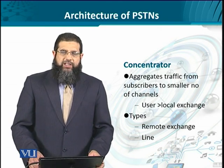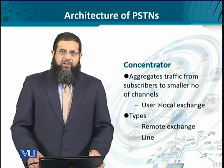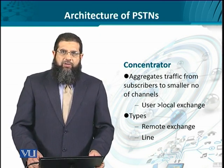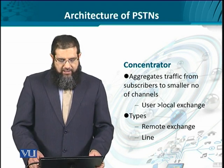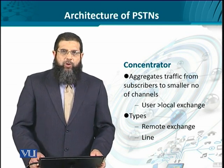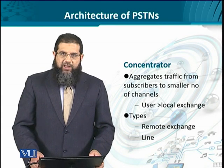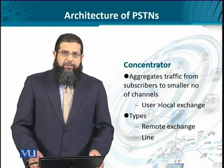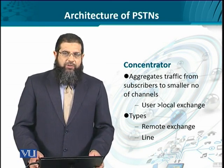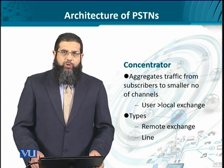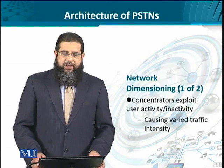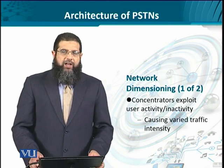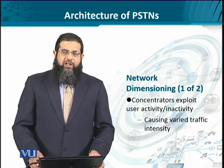Typically the number of users is much more than the overall transmission capability of a trunk, so the trunk can get busy when all users are active — that is the cost to be paid. Concentrators are typified as either remote exchange concentrators, which connect traffic from one exchange to another, or line concentrators, which aggregate individual telephone traffic onto a trunk. Network dimensioning is very important to determine the capacity of the outgoing trunk from the concentrator, exploiting the activity and inactivity of telephones.